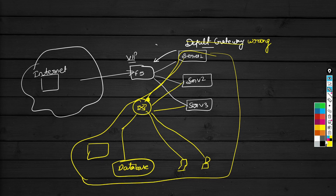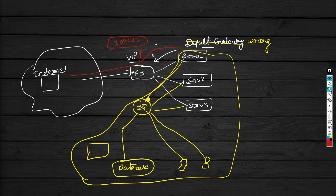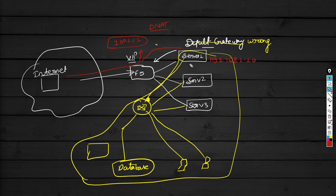The problem that arises: when any internet user sends a request to the F5 virtual IP — let's say 100.1.1.1 — the F5 will perform DNAT, destination NAT. This means the destination IP address changes from 100.1.1.1 to the actual server IP address, for example 172.16.1.10, and the request is forwarded to that server.